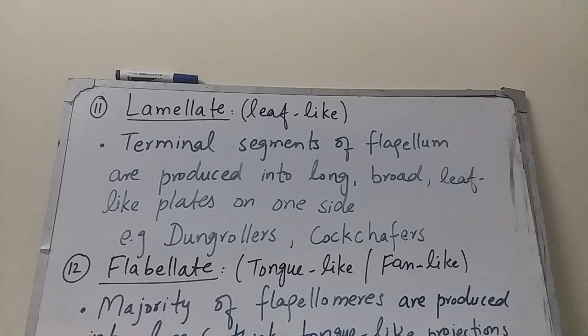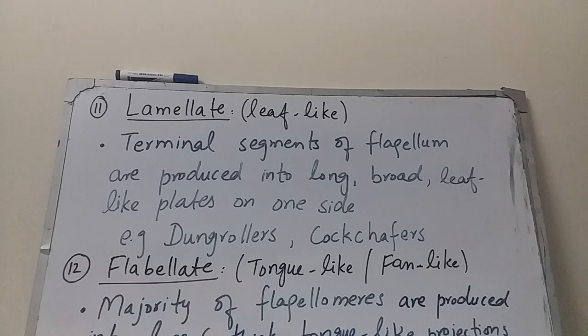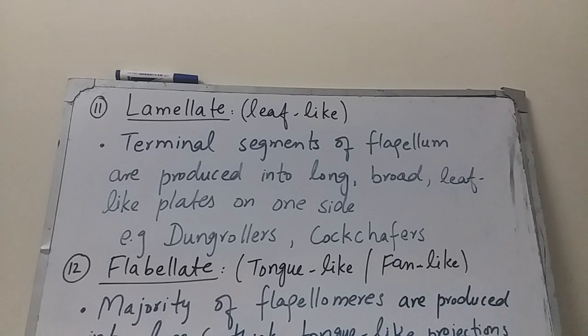The next type is lamellate antenna. Lamellate means leaf-like. The terminal segments of the flagellum are produced into long, broad, leaf-like plates on one side. Lamellate antennae are present in dung rollers (dung beetles, also known as scarab beetles), cockchafers, and rhinoceros beetles.